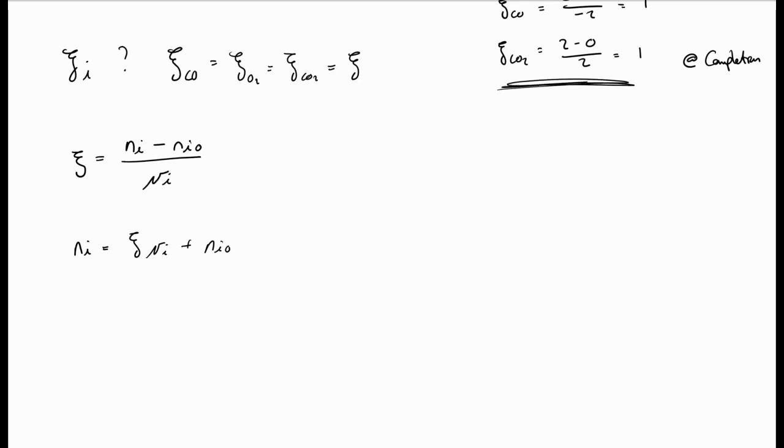This means, looking at our equation again, if we calculate the extent of reaction for the CO2, we can then calculate the moles of O2 anywhere at any time. So if you know the extent of reaction of one species, you can actually use it to calculate the moles of another species at any time based on its moles fed.